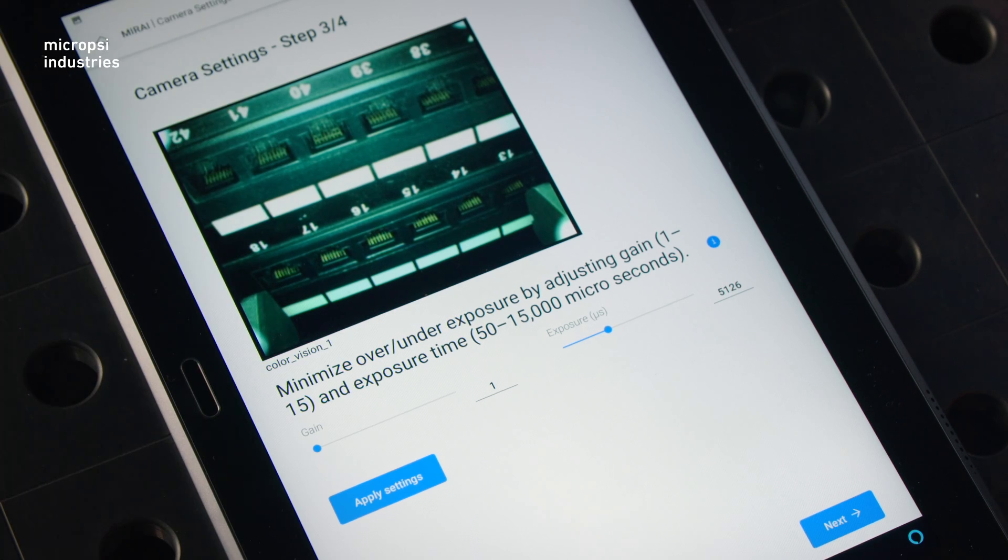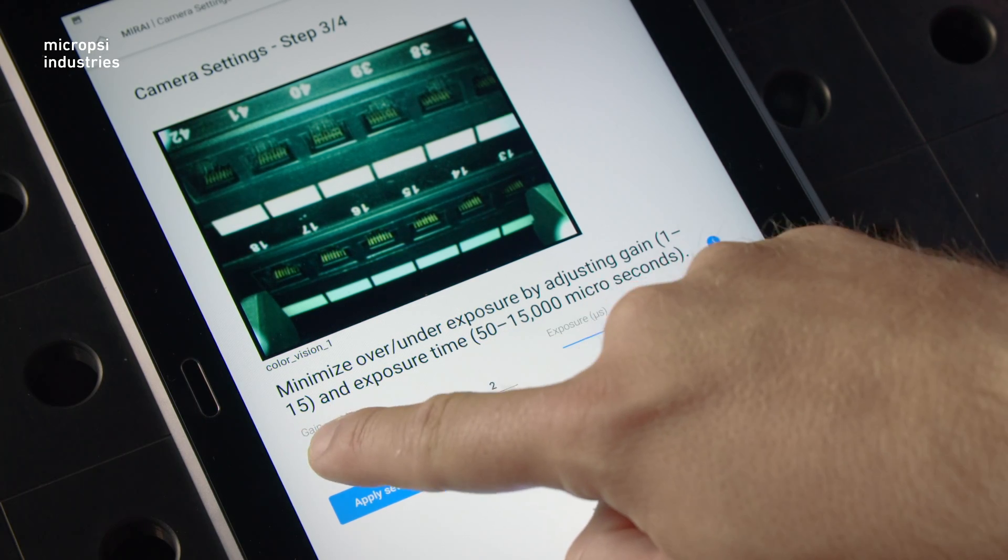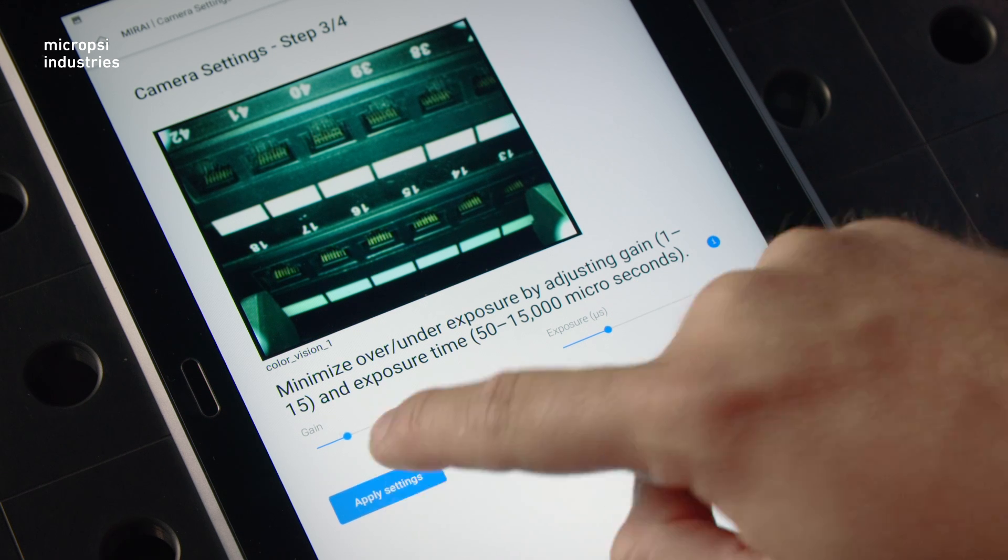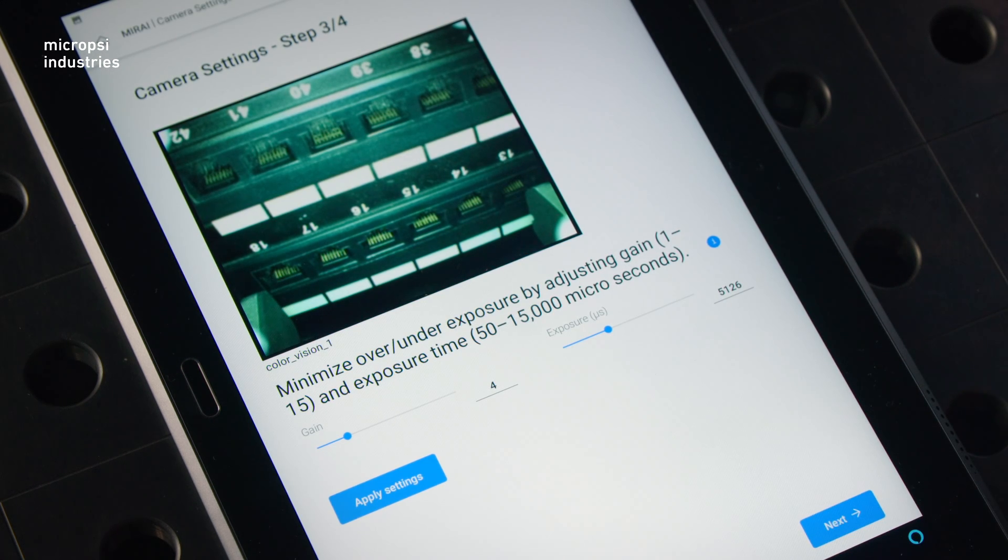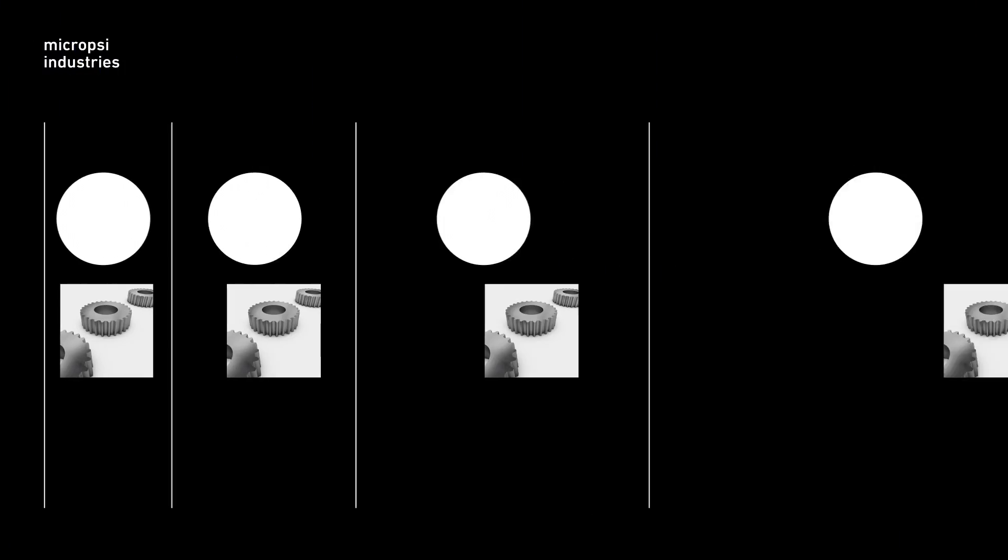Fourth, keep the gain low. Start at 1 and only increase it if you have to. Adjust the gain while the camera is looking at the brightest part of the workspace.